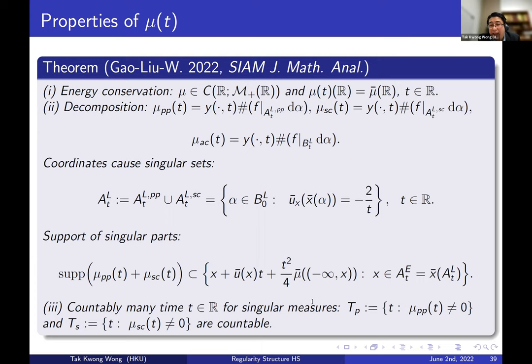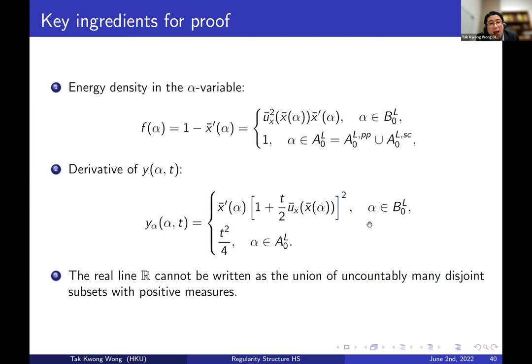After we get this formula, we can use Y(α,t) to define the sets A_pp, A_sc, and B_t by using the pseudo-inverse as explained before. In a recent work, we can actually characterize the regularity structure of the solution fairly clearly. Using the formula, one can easily check that the energy is conserved for all time — not just almost every time — so even when blow-up happens, we still have energy conservation. We can also characterize the set at time t when Y_α vanishes. That can be computed explicitly, and thus we can characterize for each time t at which locations we may have a singularity issue — and not only that, but also describe the singularity caused by the pure-point or singular part of the initial data.